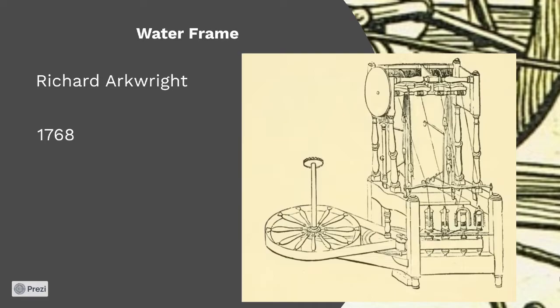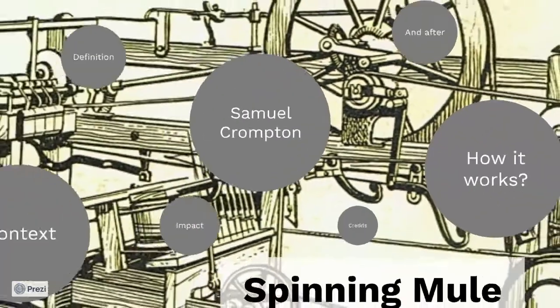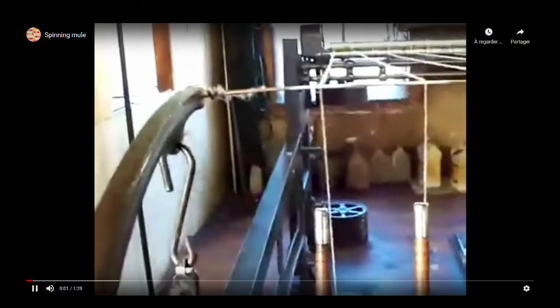Samuel Crompton was inspired by these two spinners to create his own machine. He combined these two systems and named it the spinning mule. This name was used because it is a hybrid of these two machines, and in the same way, a mule is the product of crossbreeding a female horse with a male donkey — and a female donkey is called a Jenny. The mule produced strong and thin yarn, also suitable for any kind of textile. The first mule could spin 48 spindles at the same time; now it is between 30 and 11,000. I will show you a short video — it is not the original machine of Samuel Crompton, but we can see how it works.